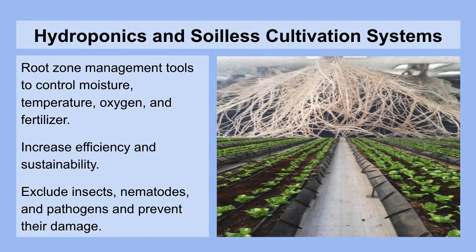Hydroponics and soilless cultivation systems, while not methods of environmental control, are root zone management tools to control the moisture, temperature, oxygen, and fertilizer at the root zone. They can increase the efficiency and sustainability of your greenhouse. What they mainly function to do is exclude insect pests, nematodes, and pathogens that may be harming your plants and prevent their damage.